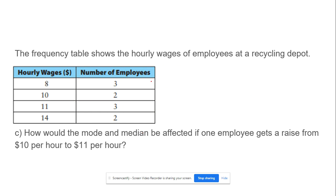Now pause this. Try this on your own. Oh no, this one's on me. So how would the mode and median be affected if one person got a raise from $10 to $11? So this is now 4. So now your mode is no longer 8 and 11, it's just 11. Your median is now, there's four numbers here and six numbers over here. So the middle two numbers are now 11 and 11. So the median also changes, and it goes up by 0.5 to 11.